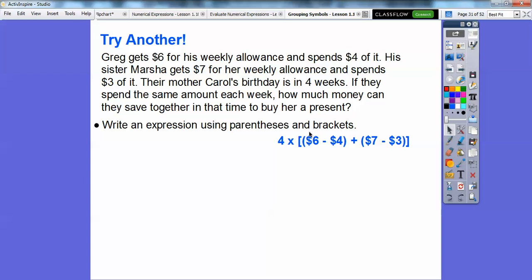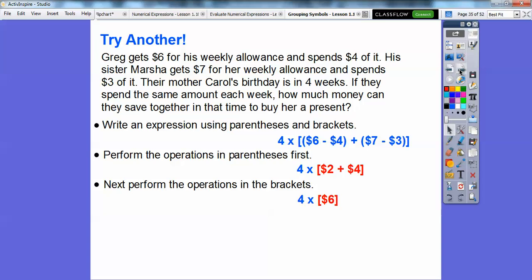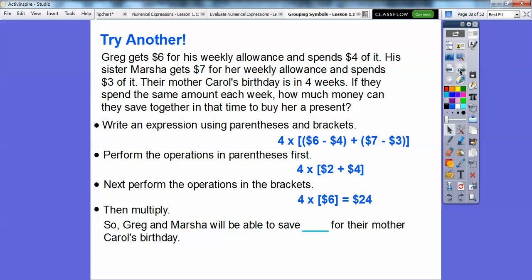So here's the 4 weeks. This is Carol's birthday. It's in 4 weeks. And then here's the money that Greg will save. He gets $6 and spends $4 of it. Marsha gets $7 and spends $3 of it each week. So we're going to add those together after we simplify that. So let's go ahead and perform the parentheses first. So 6 minus 4 is 2. 7 minus 3 is 4. And then we're going to do the 2 plus 4 next, you guys. So it gives us 6 right there. And then we can go ahead and multiply. 4 times 6 is $24. So Greg and Marsha will be able to save $24 for their mother Carol's birthday.